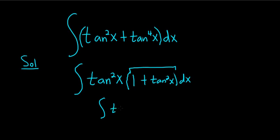So this is tangent squared x times the secant squared x. Right, that's one of the trig identities. 1 plus tangent squared is secant squared.